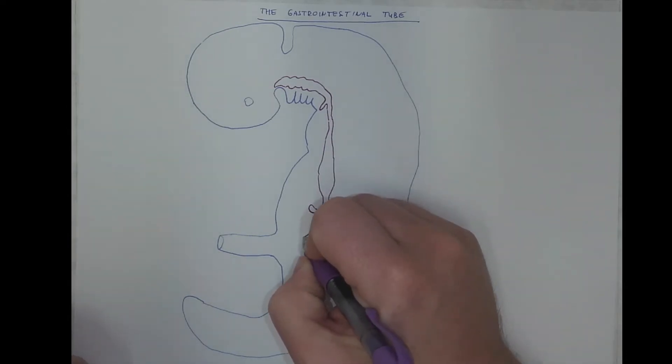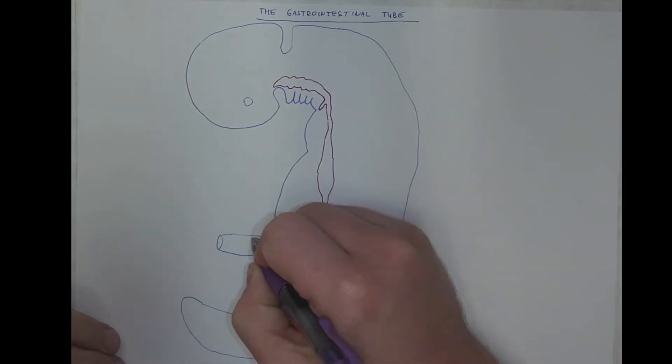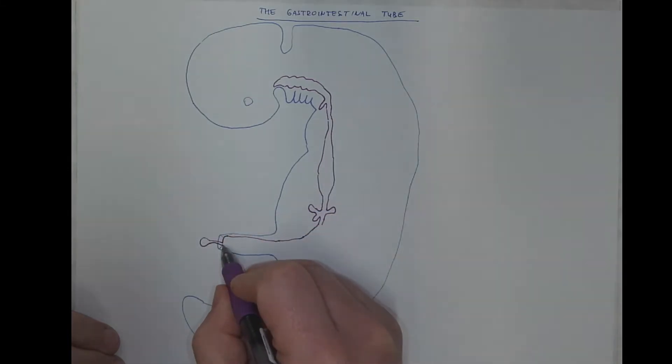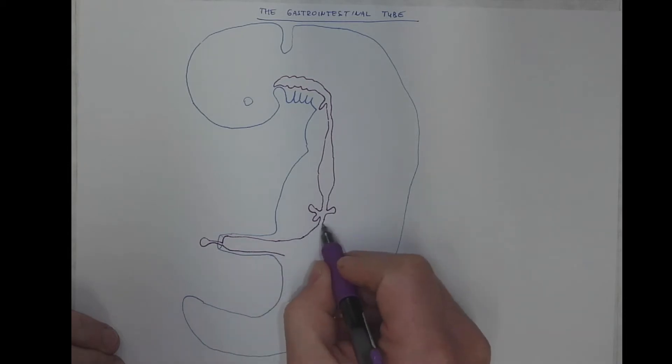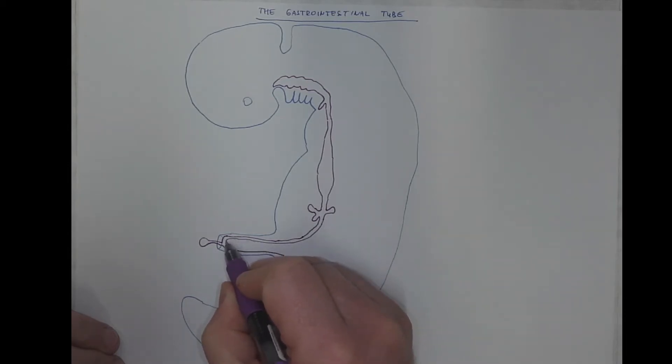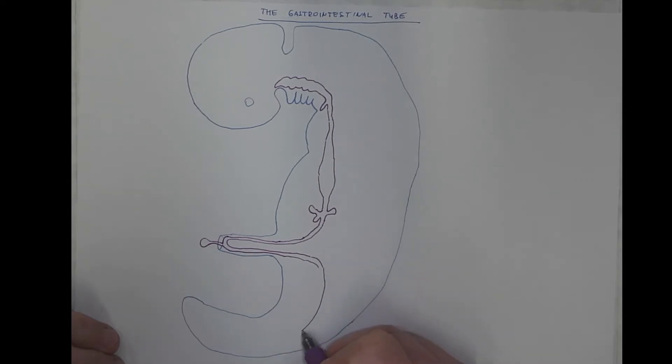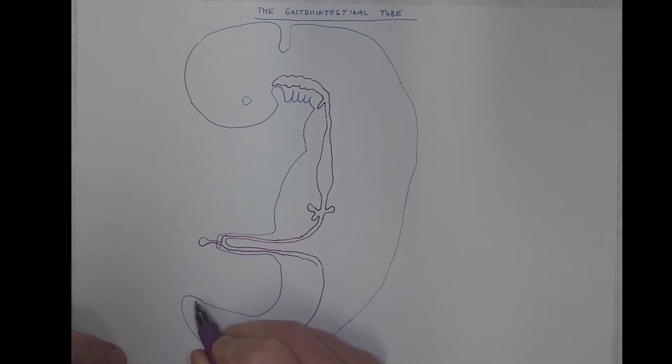Then the next division of the GIT tube forms kind of a loop, intestinal loop, goes into the umbilicus. It's connected with the remnants of the yolk sac. Then the other limb goes back to the body cavity, and here we gradually come to the posterior part of the gut.